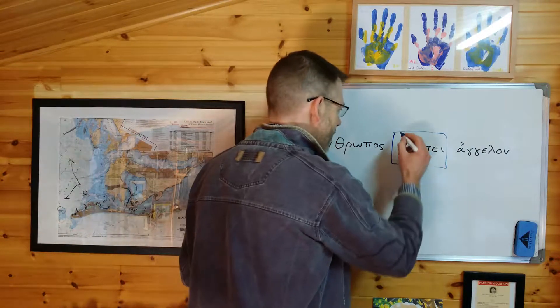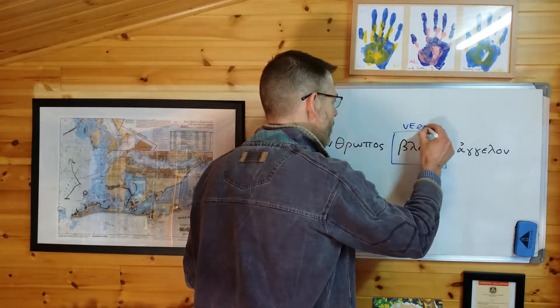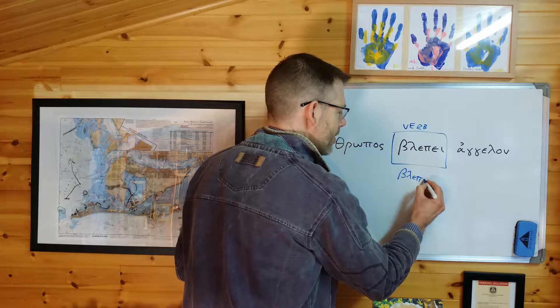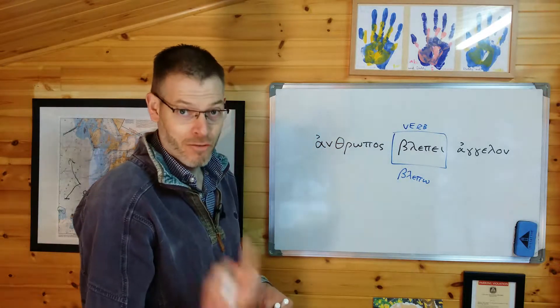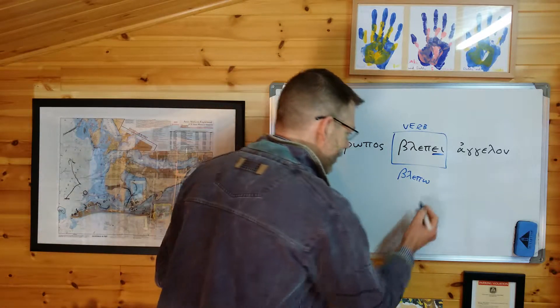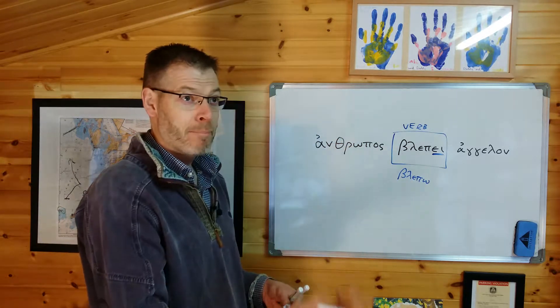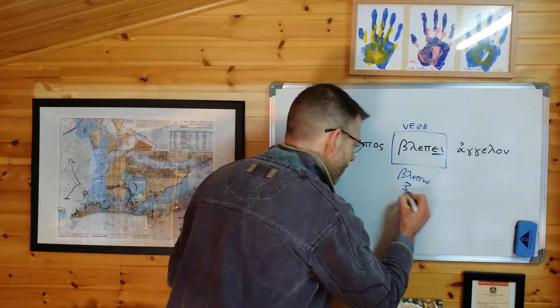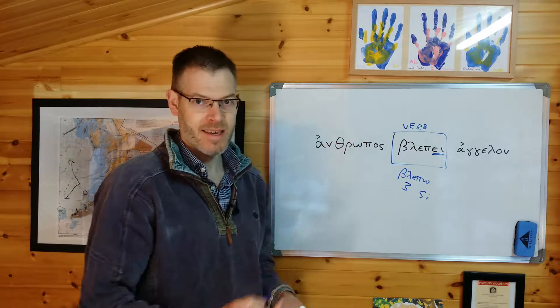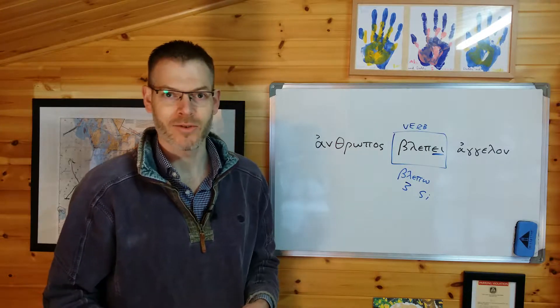It comes from blepo. So here's what I would do, especially in the early stages, put a little box around it, write verb, write the lexical form of the verb underneath, blepo, to remember, to remind you what it means. Blepe, that's highlight the ending of the verb. Blepo, blepe, blepe, third person singular. He sees, or it sees, or she sees.